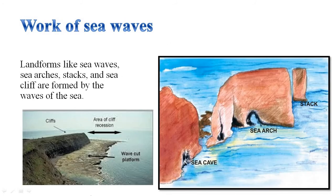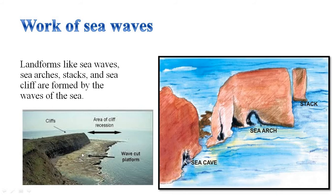Work of Sea Waves. There are some landforms formed due to the continuous cutting down of rocks by sea waves. Sea caves arise in rock carved by waves and water, which attack the rocks, thus weakening them. As these cavities become bigger and bigger, only the roof of the caves remains, thus forming sea arches. Further erosion breaks the roof of sea arches, forming stacks. The steep rocky coast rising almost vertically above the sea is called a sea cliff. The sea waves deposit sediments along the shore, forming beaches.